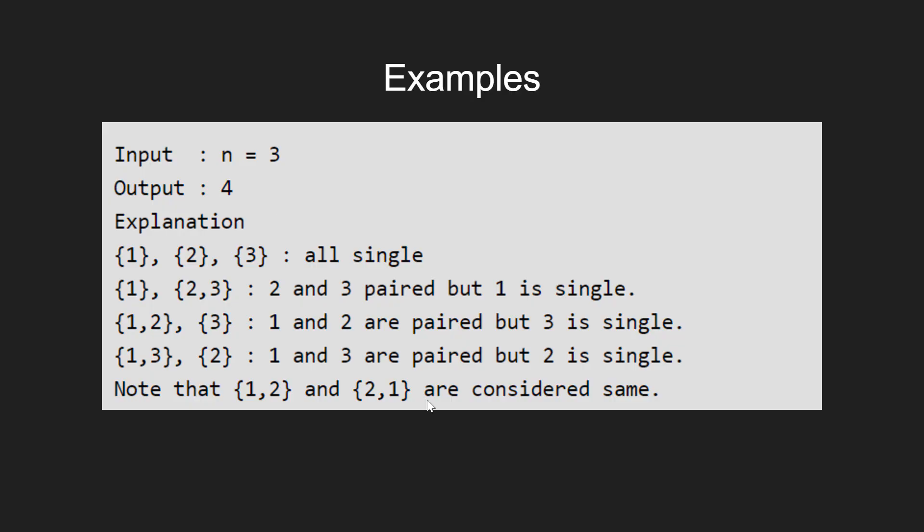Note that if 1 pairs with 2 or 2 pairs with 1, both cases are considered the same. Now, how do we find the total number of ways efficiently?